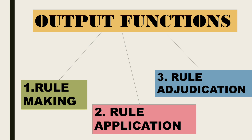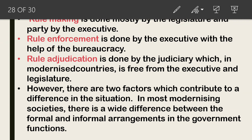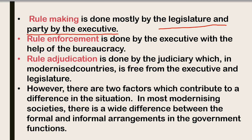Now the output functions — output functions तीन sub-functions में divided हैं: first is rule making, second is rule application, and third is rule adjudication। Rule making is mostly done by the legislature and partly by the executive। Rule making का मतलब है law बनाना। Lok Sabha और Rajya Sabha में bill present किया जाता है, majority votes आने के बाद bill दोनों सभाओं से pass होकर President को दिया जाता है, और President की assent मिलने के बाद वो bill law बन जाता है। इसी पूरी process को rule making कहते हैं।